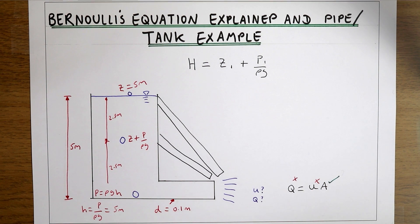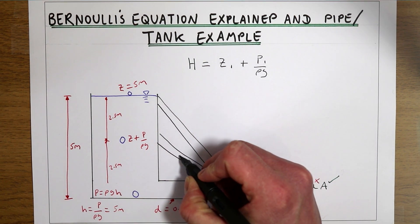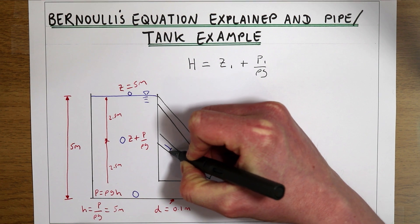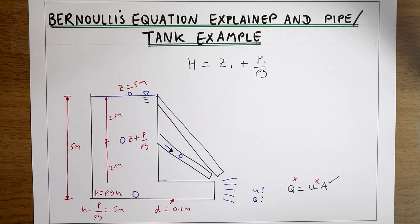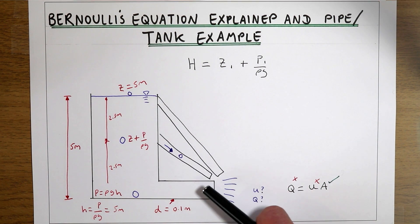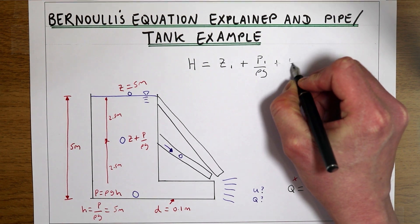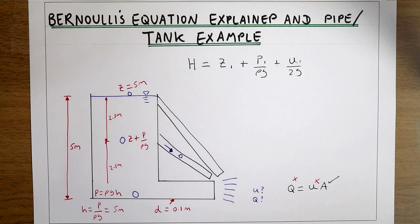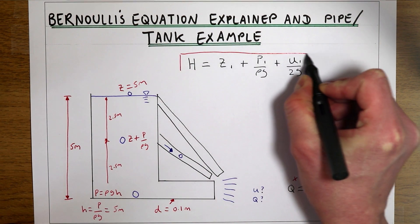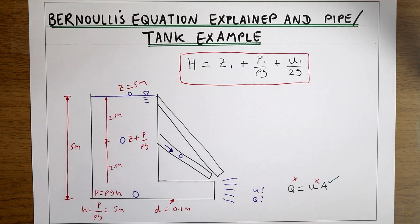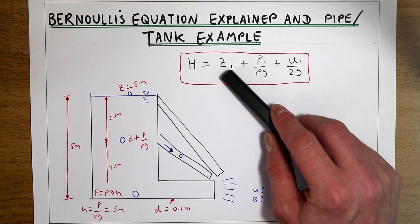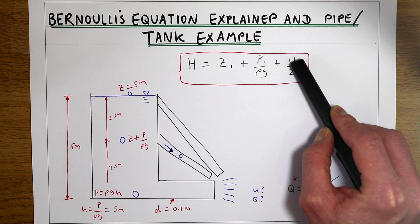The final way in which particles can carry energy is kinetic energy — as they start to move down the pipes. As a particle accelerates down the pipe, some of its elevation and pressure energy is transformed into kinetic energy. So we need a final term, which is kinetic energy in units of meters. This gives us Bernoulli's equation: the total energy of any particle is the sum of its elevation, pressure, and velocity terms.